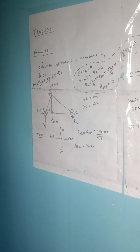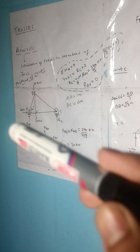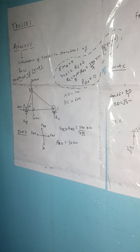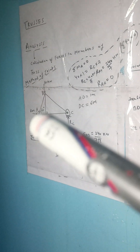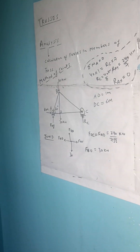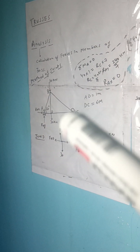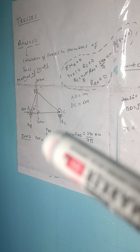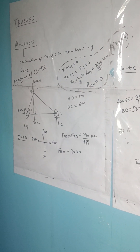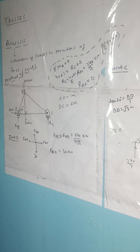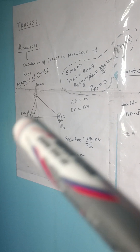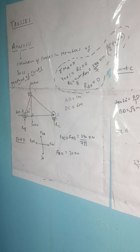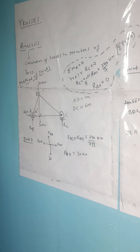In any question of truss, first of all you have to calculate the reactions at the supports — that is the first step before solving for member forces. It is a hinge support and a roller support. As I told you in the last video, we apply hinge and roller for the determinacy of the truss, so there will be three unknowns: two in the y-direction and one in the horizontal direction.